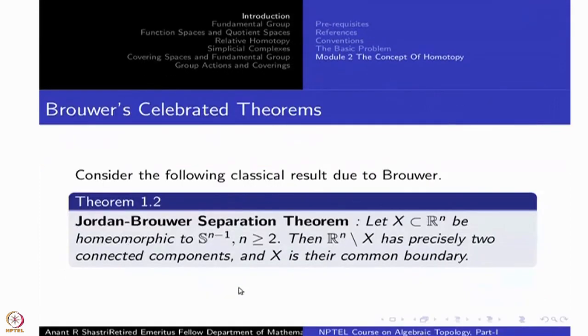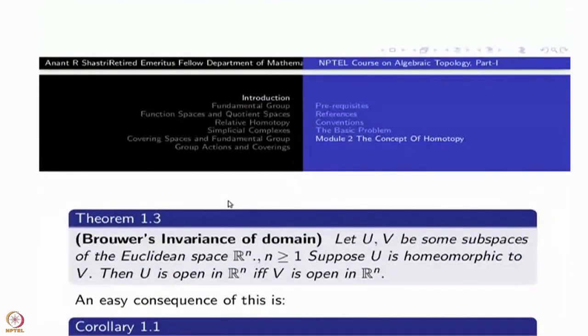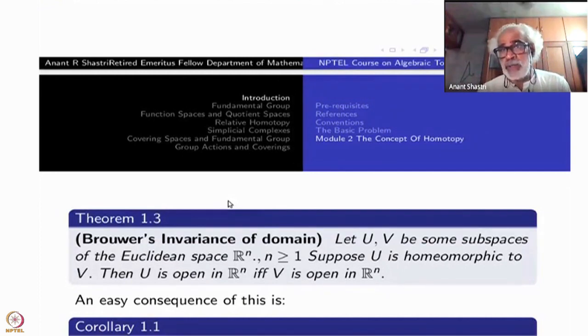The next thing is Brouwer's invariance of domain. Invariance of domain means, you know what is the meaning of domain in calculus? It is an open and connected subset. Open and connected subsets of R^n are called domains. Suppose you have U and V, some subsets of R^n and they are homeomorphic. If one of them is a domain, that is one of them is open, then the other one is also open.